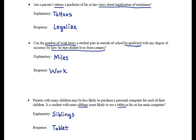Let's take a look again at all three examples. Our first example used tattoos and legalize as our explanatory and response variables. Tattoos is categorical, and legalize is categorical — so this is a categorical explanatory variable and a categorical response variable. Our second example was miles from campus, which is quantitative, and hours of work, which is also quantitative.